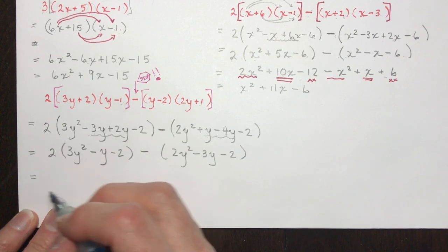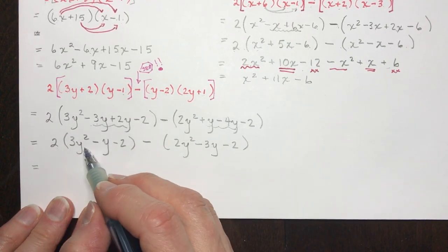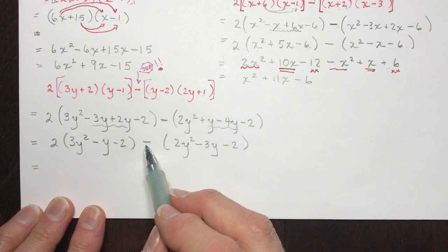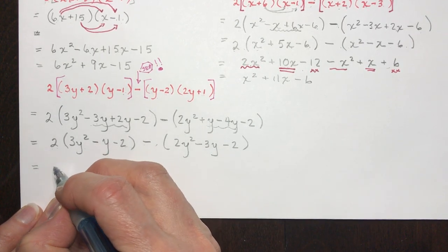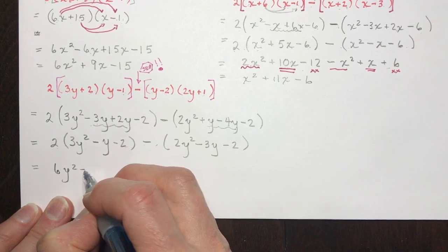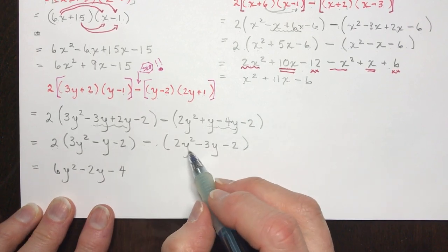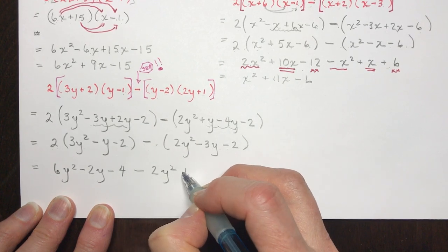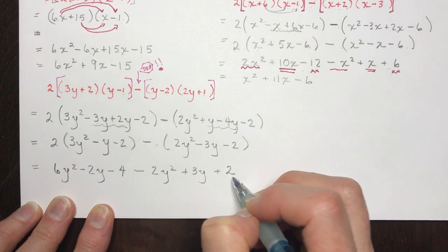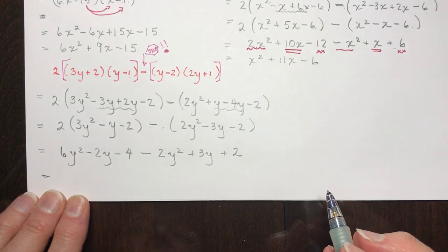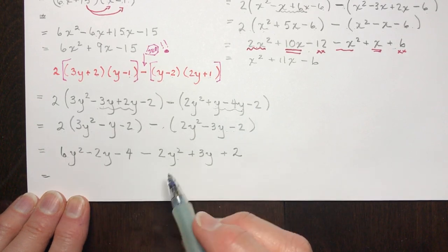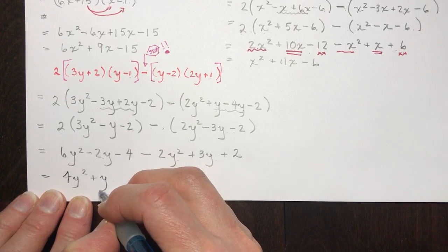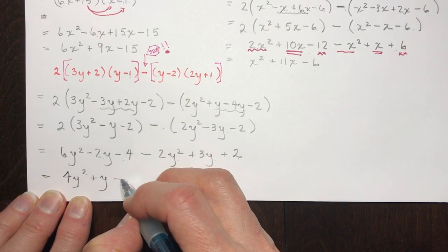Now the final expansion: 2 times everything in its bracket, and minus 1 times everything in the other bracket. So 2 times each term gives 6y squared minus 2y minus 4. Changing the sign of everything in the other bracket gives minus 2y squared plus 3y plus 2. Gathering like terms: 6y squared minus 2y squared is 4y squared, minus 2 plus 3 is 1y, and minus 4 plus 2 is minus 2.